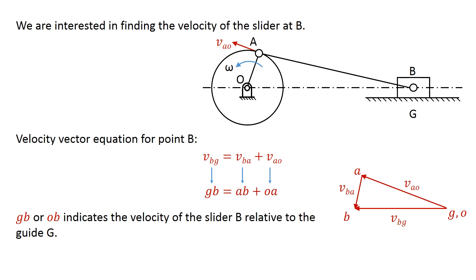The vector GB indicates the velocity of the slider B relative to the guide G. The slider moves towards the left as indicated by the vector GB.